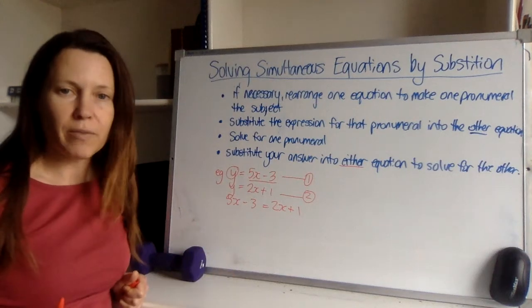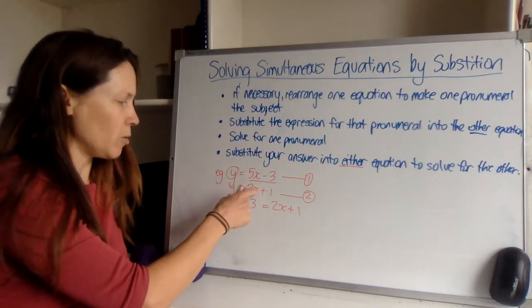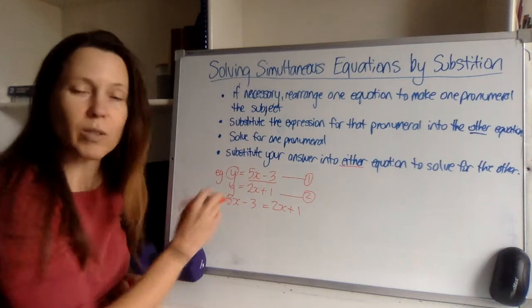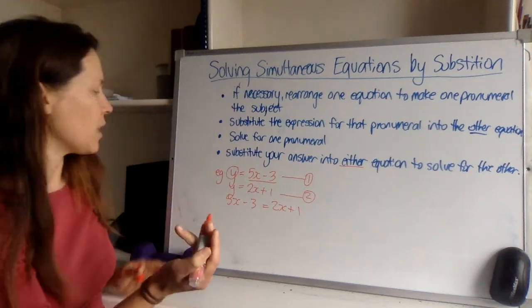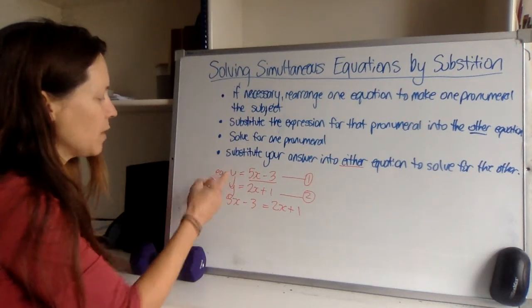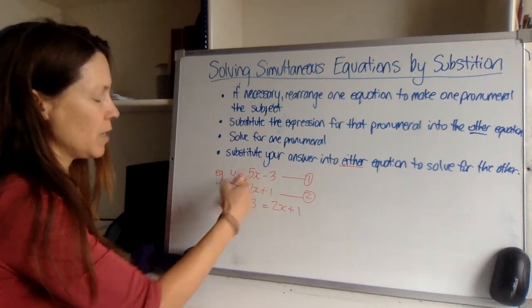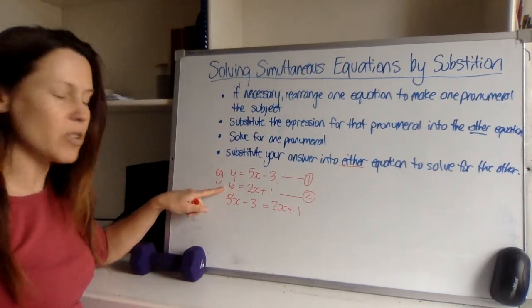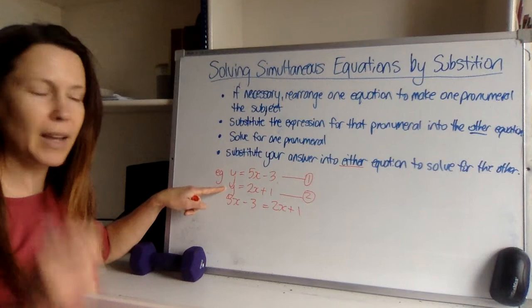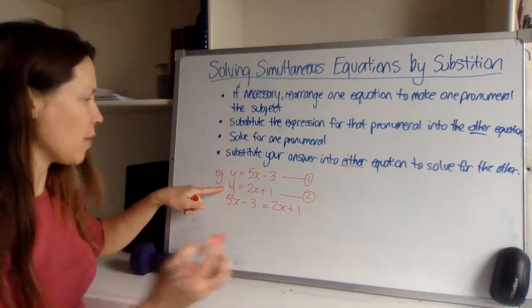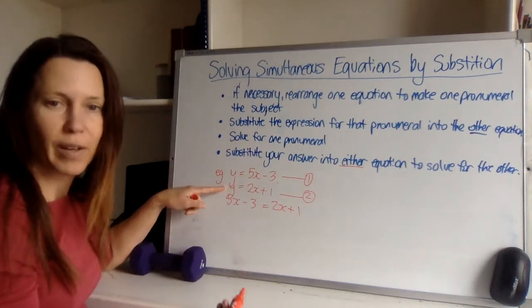Now what I effectively did there was I said y is equal to this and y is equal to that, so this must be equal to that. But the other way to think of it is I had an expression for y, it was 5x minus 3. So then I just rewrote the second equation, but instead of writing y, I can describe it as 5x minus 3.